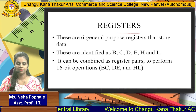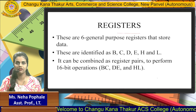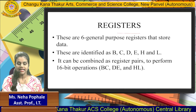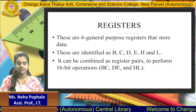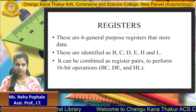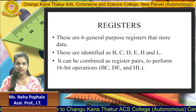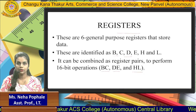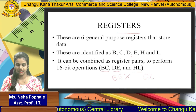Next are the general purpose registers. These are 6 registers used for performing operations like addition, subtraction, or any other operations. These registers are identified as registers B, C, D, E, H, and L. These registers are also 8-bit, but if you want to perform an operation on data of more than 8 bits, you can use them in combination. The valid combinations are BC, DE, and HL. You cannot make combinations like BE, DL, or CH.